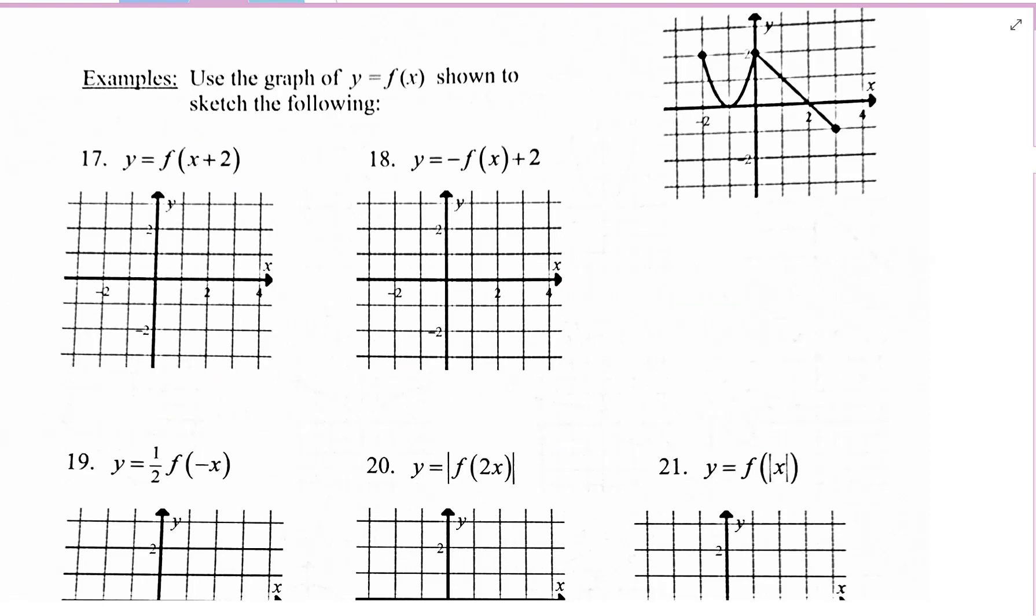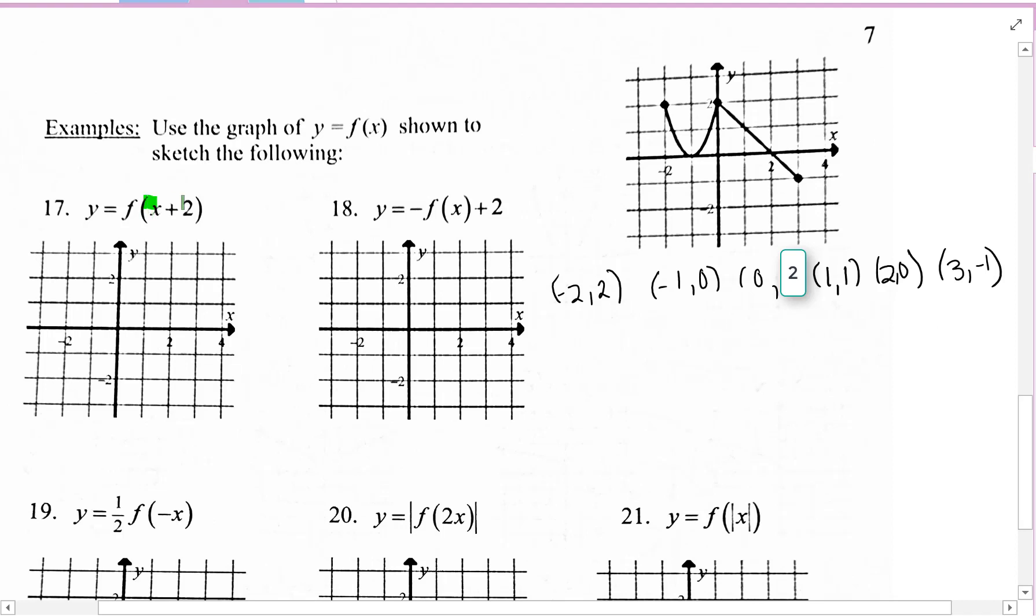The graph of f of x is shown, and we're going to use that to sketch the following transformations of f of x. I'm just going to point out some of the main points we have here. Okay, so when this value inside of here is plus two, that means we're going to move everything to the left two. I have negative two, two is going to move to the left two, and that's off the graph, so I don't have to graph it. So the next point is negative 1, 0. That needs to go to the left two. Negative 3, 0. 0, 2 needs to go to the left two. And now I'm just going to kind of follow this pattern, right? That's just kind of a line.